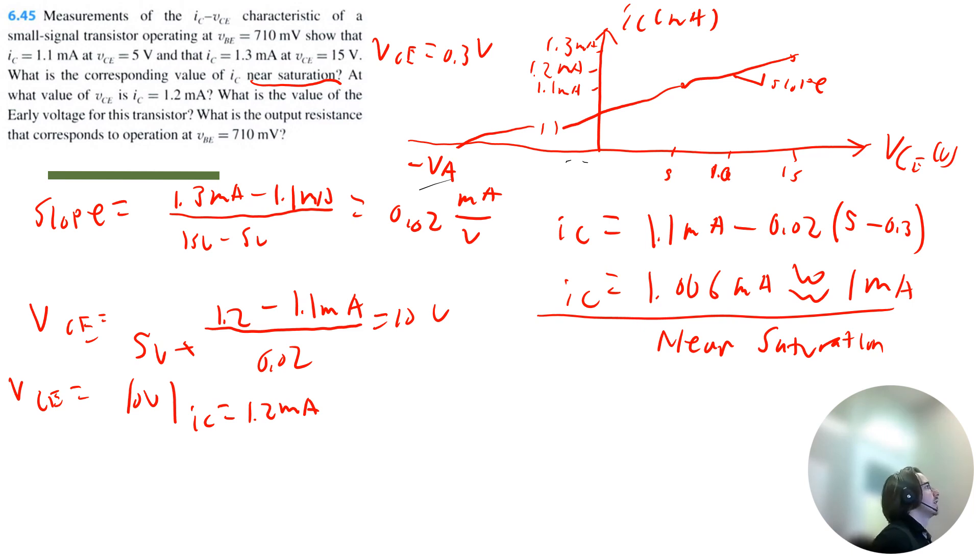Next question. What is the value of the early voltage? So the slope of this curve can also be equated as the value of the current, collector current, at VCE equals 0 divided by the early voltage. Which means early voltage can be IC at VCE equals 0 divided by slope. So every 5 volts we're losing 0.1 milliamps. So that means this y-intercept should just be 1 milliamp.